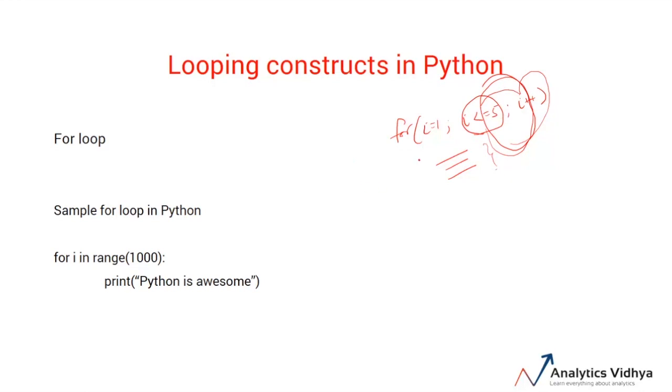But this is not how for loops work in Python. For loops require iterables. So what are iterables? For example, in this case, for i in range(1000), what range(1000) does is it creates a sequence which starts from 0 and ends at 999.